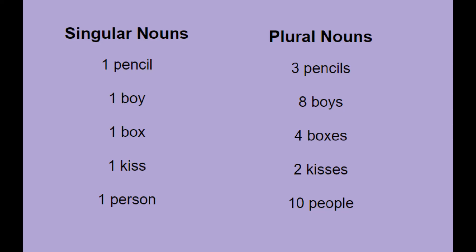A noun is a person, place, or thing. When we are talking about one person, place, or thing, it is called a singular noun — singular means there's just one. But if we're talking about more than one of something, we call it a plural noun. Plural means two or more. So if I'm holding one pencil, that is a singular noun. But if I pick up two more and I'm now holding three pencils, pencils is a plural noun.